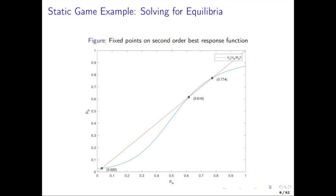With successive approximations, you start with some initial guess, say one half. You evaluate the second-order best response function, which returns around 0.4. You put that 0.4 back into the second-order best response function, get 0.2, and keep going until you converge to an equilibrium. But if you start somewhere else — say over here — you'll converge to a different equilibrium. So depending on the starting value, you can converge to several different solutions.